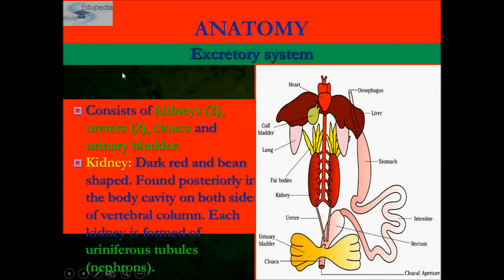The elimination of nitrogenous waste is carried out by a well-developed excretory system. The excretory system of frogs consists of a pair of kidneys, ureter, cloaca, and urinary bladder. These are compact, dark red and bean-like structures situated a little posteriorly in the body cavity on both sides of the vertebral column.